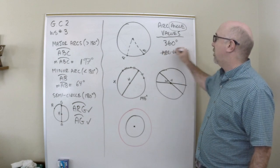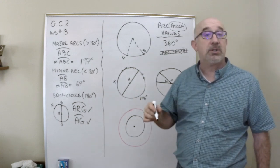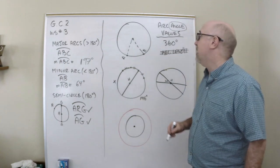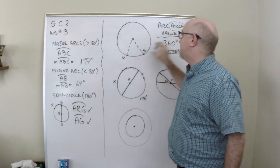This isn't what we're working with right now. We will later work with arc length, but right now we're talking about the arc's angle value. And again, the sum of all of those adds up to 360.